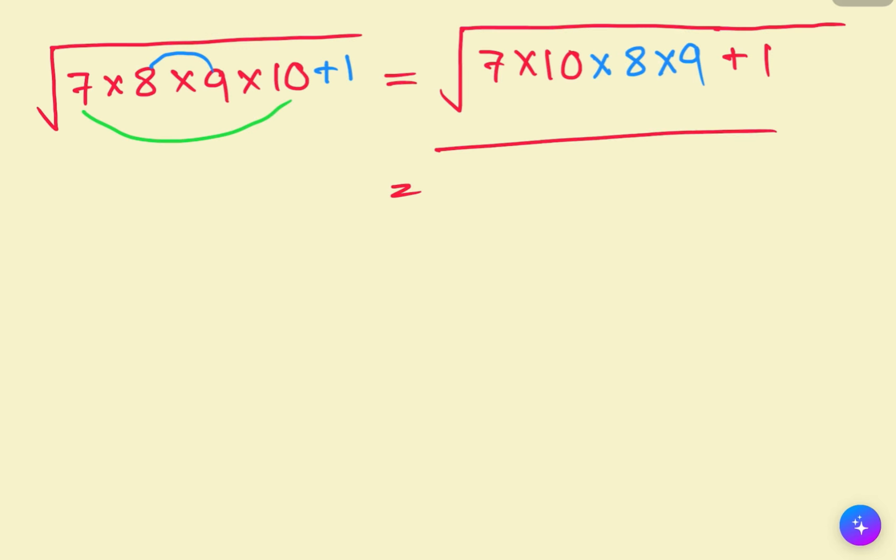Next step: 7 multiplying 10 is 70, and 8 multiply 9 is 72. So we have the square root of 70 times 72 plus 1.